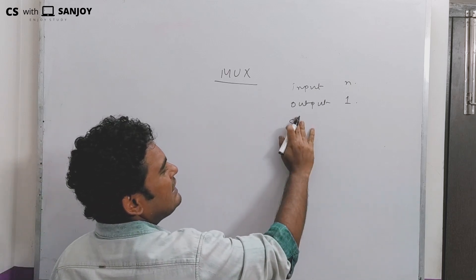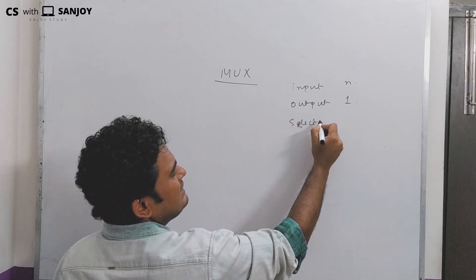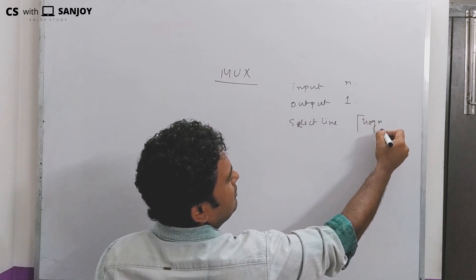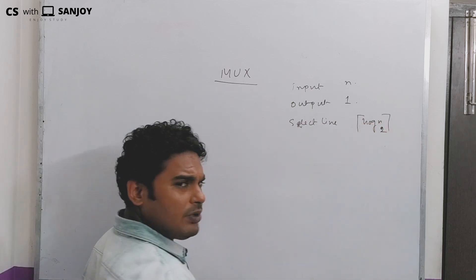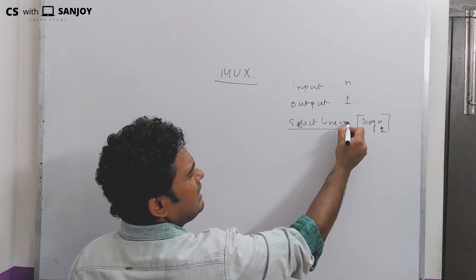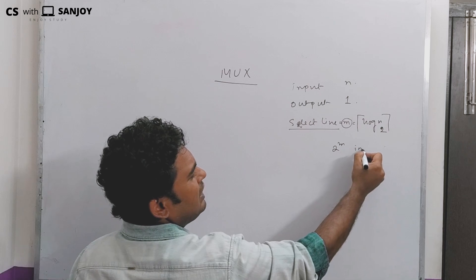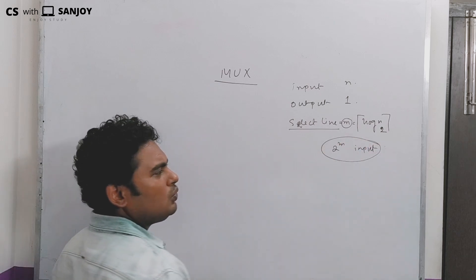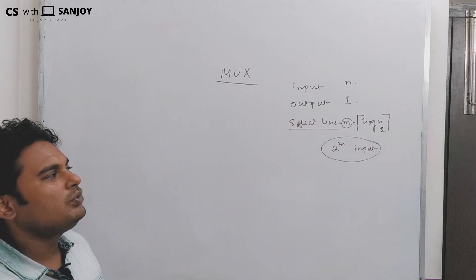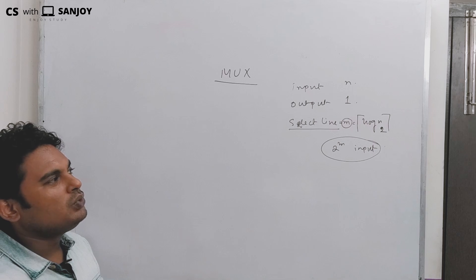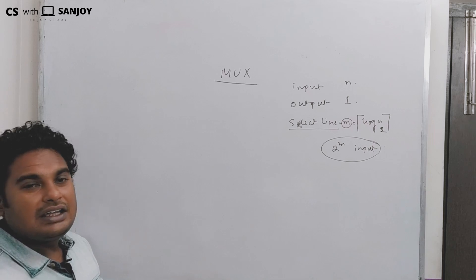The multiplexer has a select line. The number of select lines is ceiling of log N base 2. So we have input, output, and select line, where select line equals log N base 2.